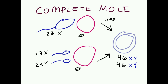A complete mole can develop in one of two ways, both through fertilization of an empty egg devoid of genetic material. One way: a sperm fertilizes the empty egg, and the paternal genetic material then duplicates, producing a diploid embryo — uniparental disomy of the complete paternal genome, resulting in 46XX. Another way is dispermic fertilization of an empty egg, where you still have a complete diploid genome, and this can be 46XX or 46XY. Either way, a complete molar pregnancy develops from a diploid embryo.